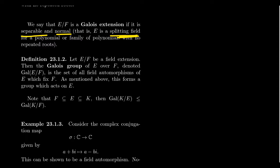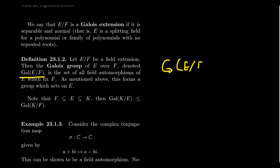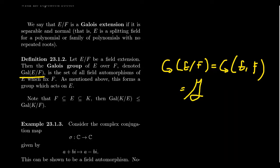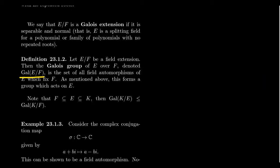So imagine we have a field extension E over F. We define the Galois group of this field extension, denoted in this lecture series as Gal(E/F). Some people use G(E/F) with a comma, or calligraphic Gs, or other notations. Here we use Gal, short for Galois.